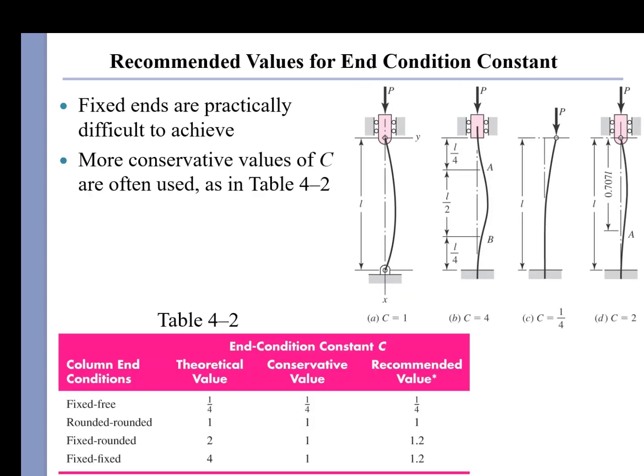So recommended values for the end conditions: there are theoretical values where a pinned-pinned has C equal 1, a fixed-fixed has a C factor of 4, a fixed-free has a C factor of 1 quarter, and a pinned-fixed has a C factor of 2. Well, those aren't very conservative. And so generally, they want you to use a conservative value of either 1 or 1 quarter when you are calculating the critical buckling loads for compressively loaded columns.